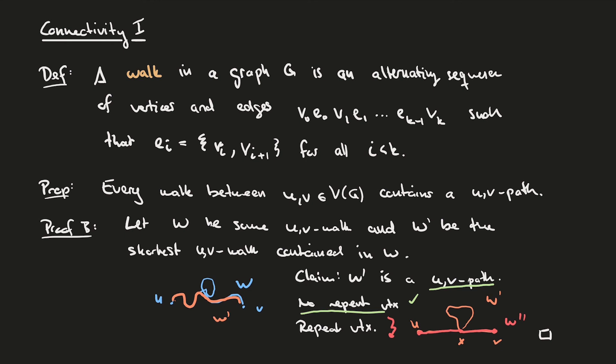To sum up, a graph is connected if we can find a path between any two of its vertices. We've introduced a less stringent object — a walk between two vertices — and shown that whenever we have a walk between two vertices, that walk contains a path between those vertices. This means that to check if a graph is connected, we just need to find walks between any two of its vertices. Next time we'll continue talking about connectivity, and in particular we'll look at separating sets and k-connectivity.